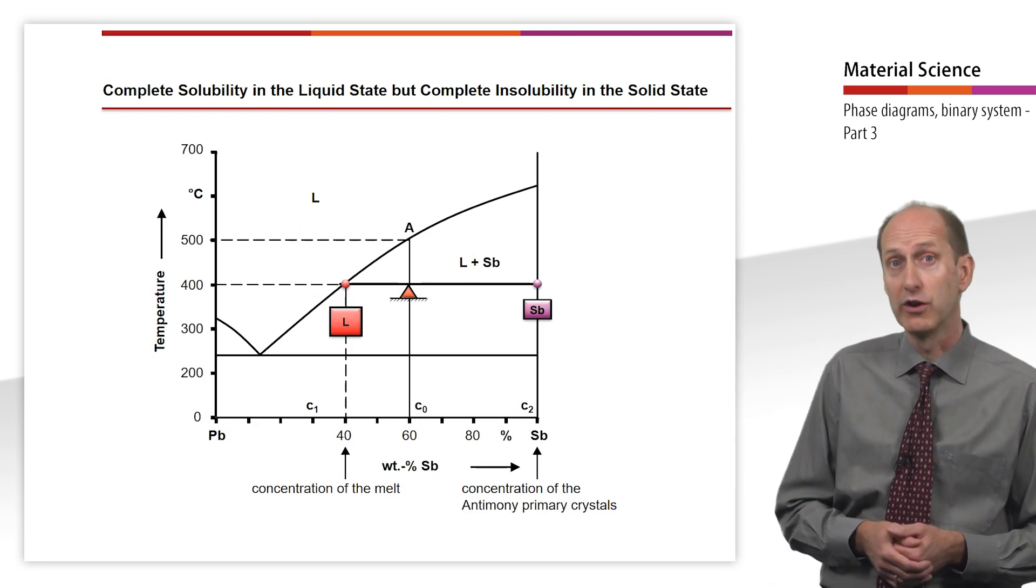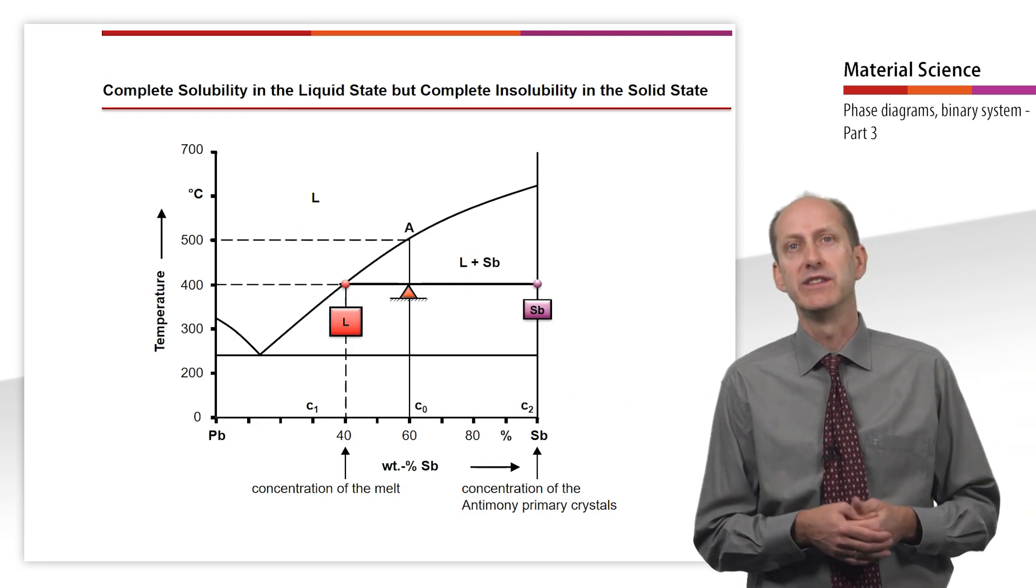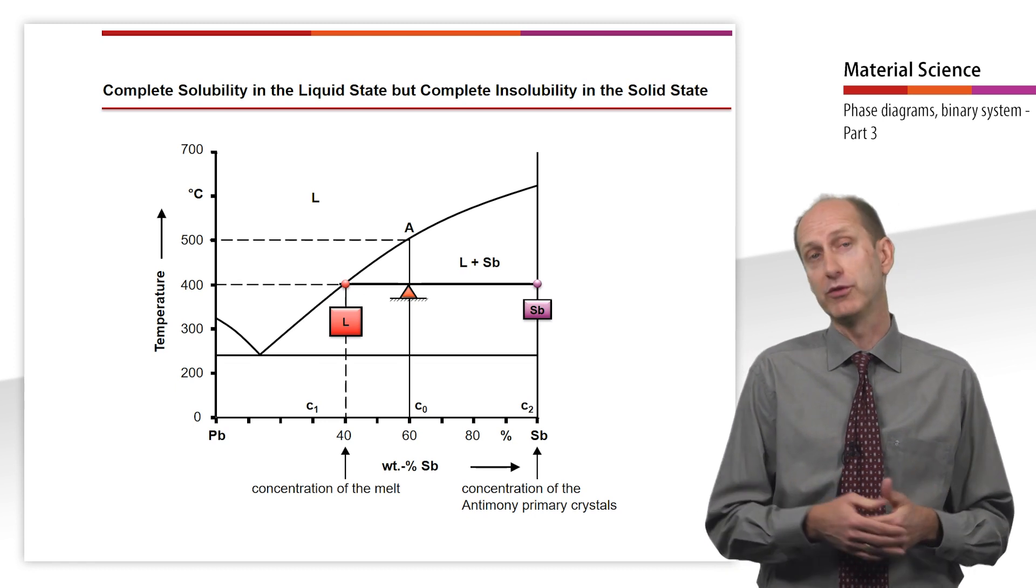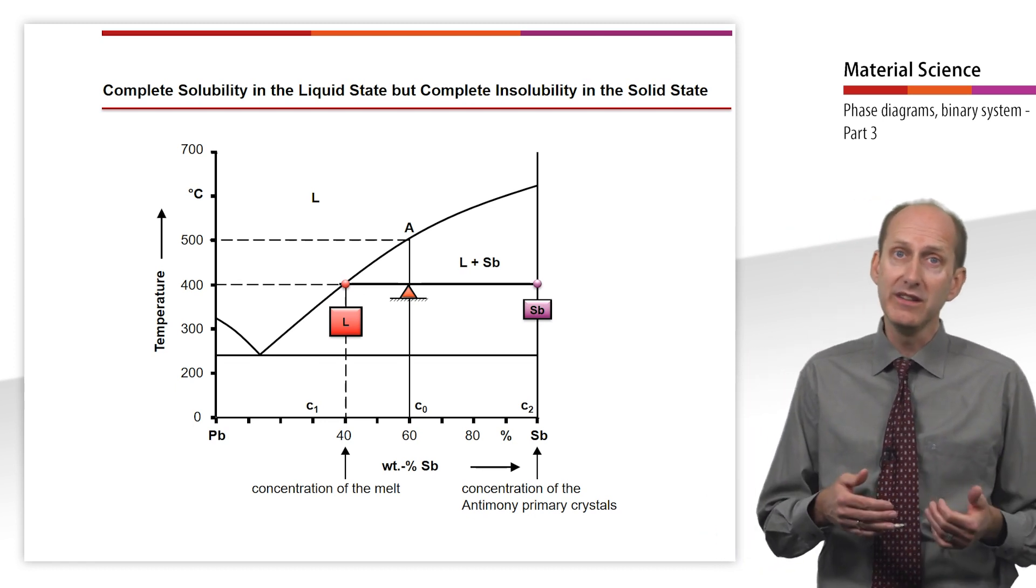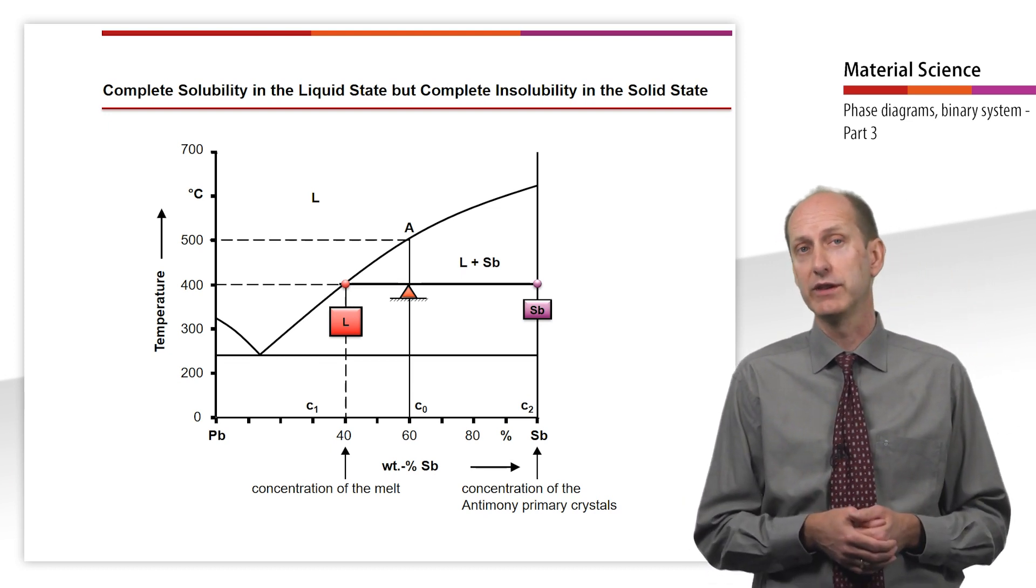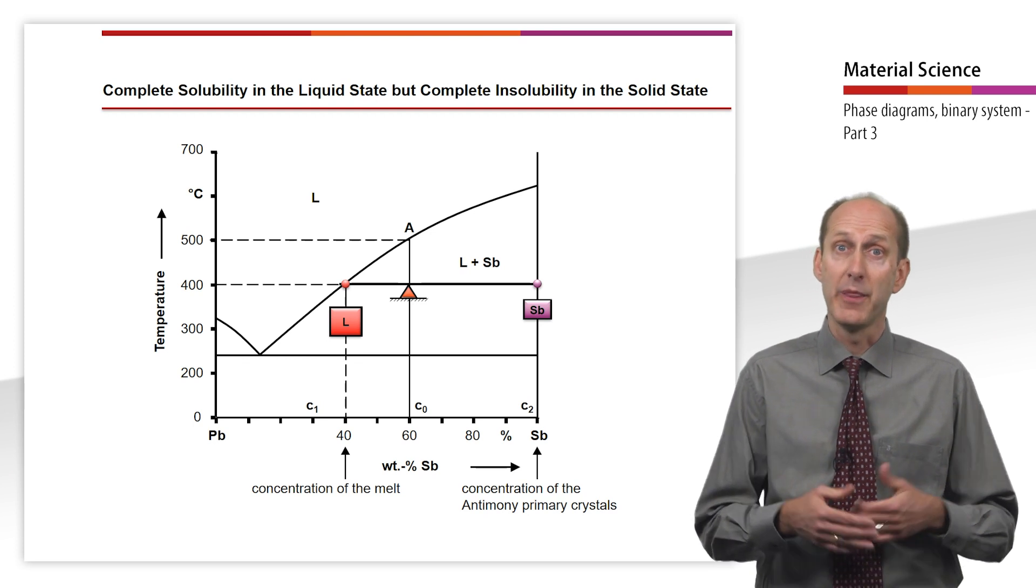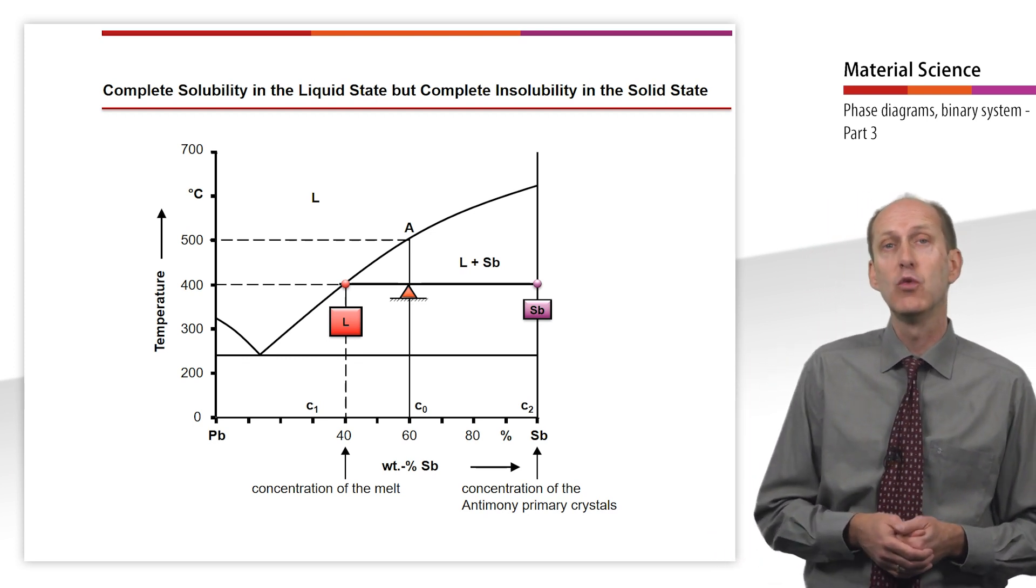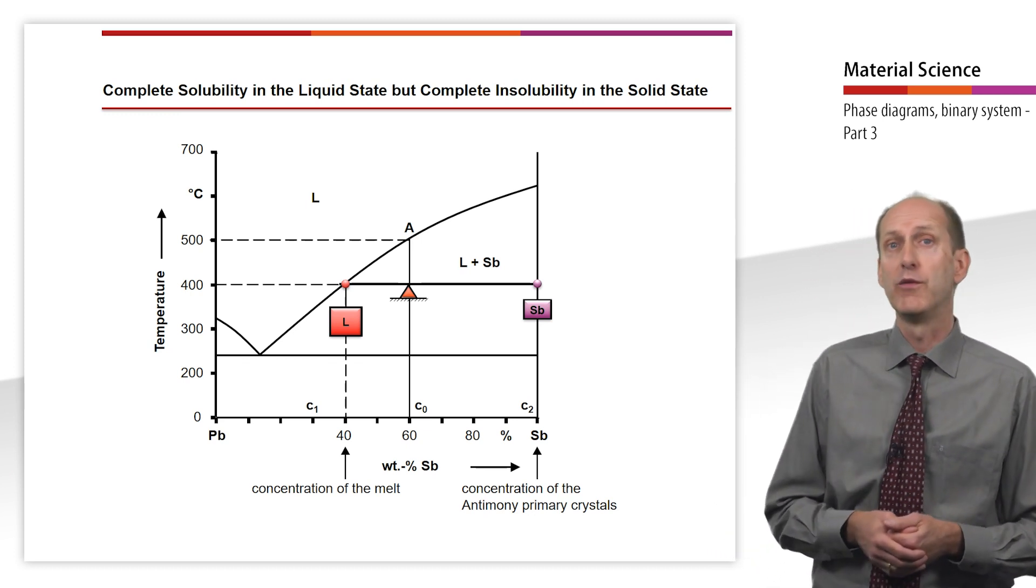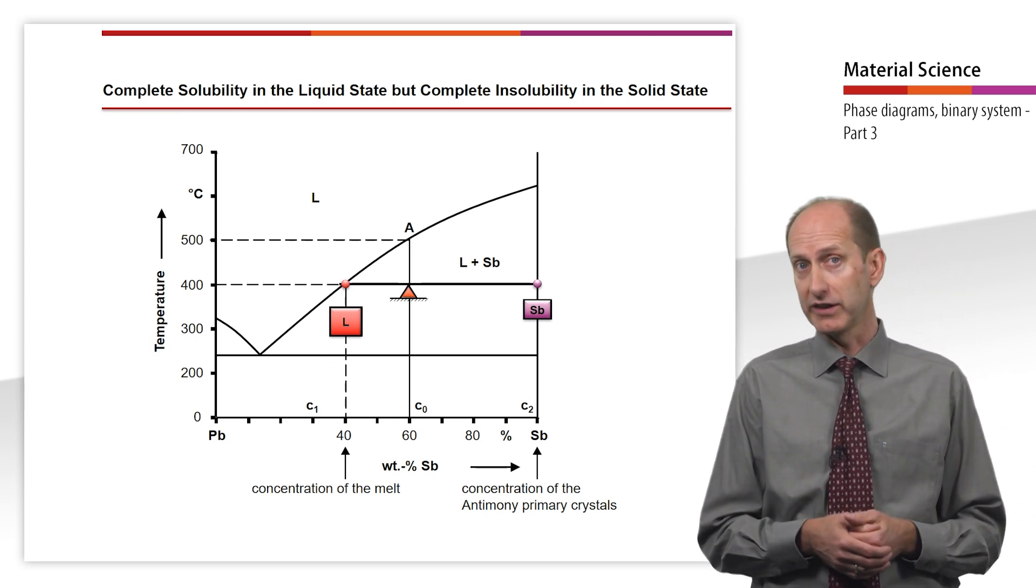Analogous to our copper-nickel example, we will now take a closer look at an alloy with 60% antimony. Here, it is easy to identify the start of solidification at 500 degree Celsius and the end of solidification at 247 degree Celsius.